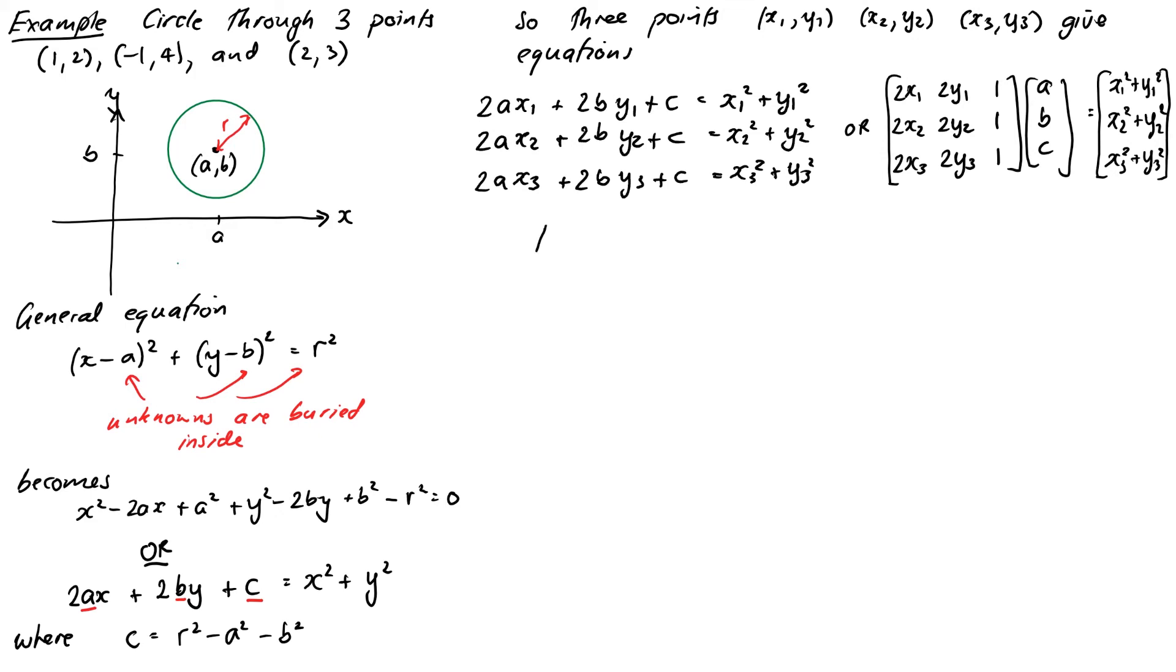So if we put in our particular three points, the system becomes, and this time I will write it as an augmented matrix, it becomes 2, 4, 1, 5. Then we have negative 2, that's twice negative 1, 8, that's twice 4, 1, 17. Okay, 1 squared plus 4 squared, that's 17. And then we'll have 4, 6, 1, so twice the coordinates 4 and 6, then 1. And then 13, which is 4 plus 9.